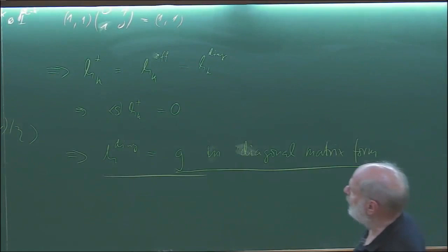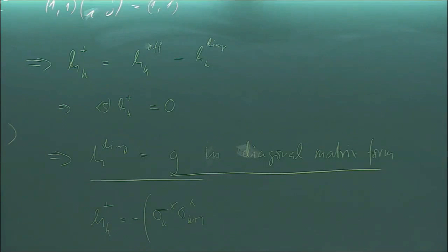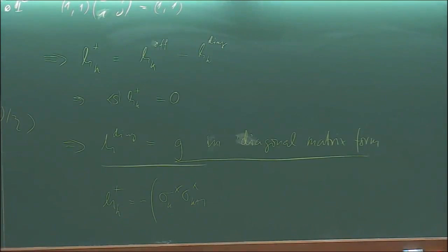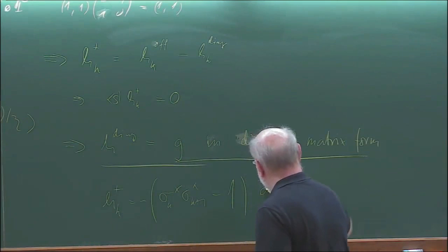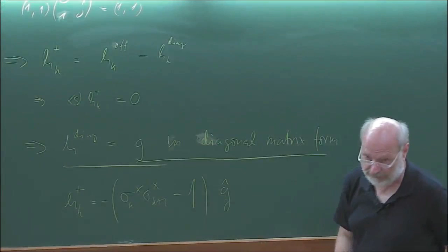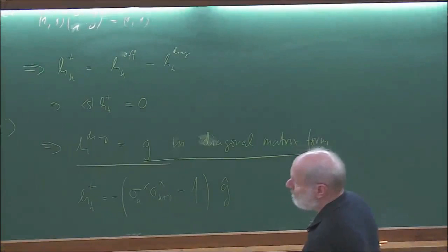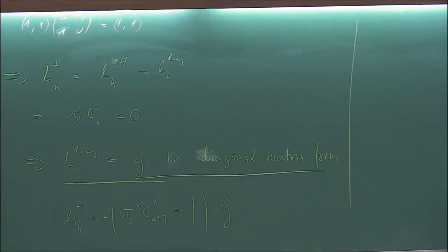We now have the generator constructed. I will use it later; for now I want to know the stationary distribution. The stationary distribution is an eigenvector with eigenvalue zero: H pi = 0. So we ask, what is this pi?